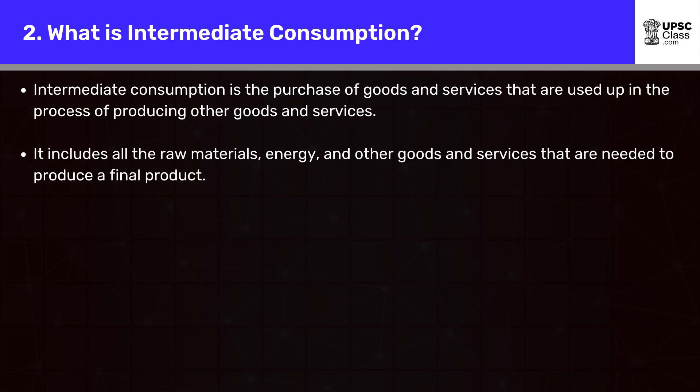What is intermediate consumption? Intermediate consumption is the purchase of goods and services that are used up in the process of producing other goods and services. It includes all the raw materials, energy, and other goods and services that are needed to produce a final product.